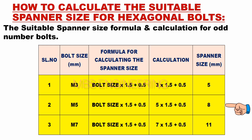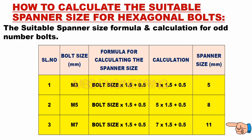The suitable spanner size for bolt size M5 is 8 mm. The suitable spanner size for bolt size M7 is 11 mm.